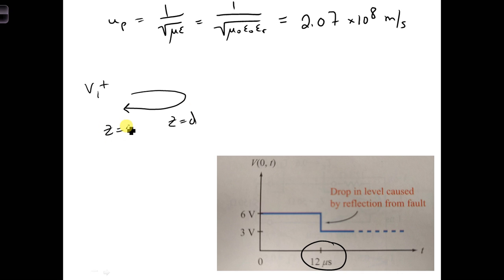so then this would be Z equal 0, then we can write 12 microseconds times U P meters per second is equal to the distance to the fault and back, which is 2D.